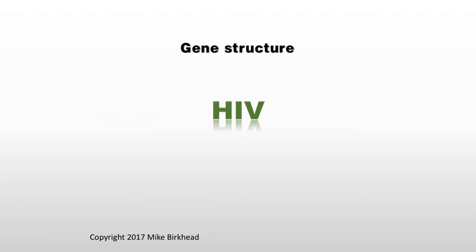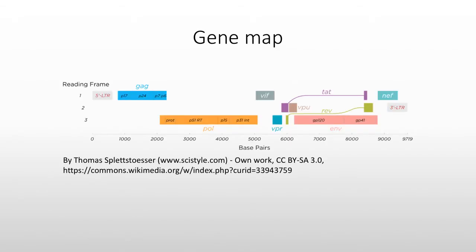In this presentation, we're going to cover the structure of the HIV genome and the function of the individual genes. Here's a map of the genome uploaded to Wikimedia Commons by Thomas Speltz-Doser. Out of all of the images of the gene map of the HIV genome that I have seen, I like this one the best because it shows a couple of really important things.